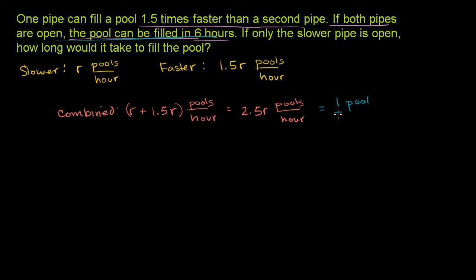One pool in every 6 hours is the same thing. So that's this line right over here. One pool in every 6 hours is the same thing as 1 sixth of a pool per hour, 1 sixth pools per hour. And then once again, we have 2.5R is equal to 1 sixth. We can multiply both sides. Let me rewrite it so I have some real estate. 2.5R.